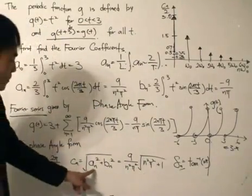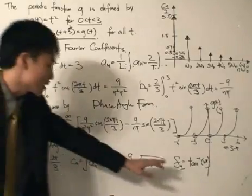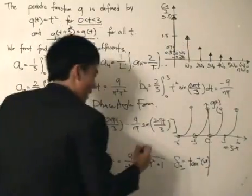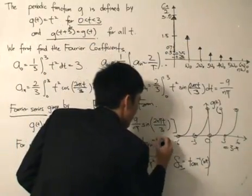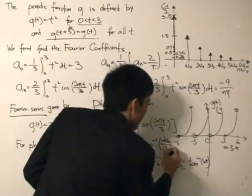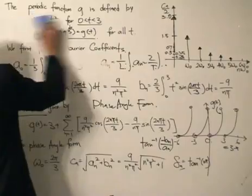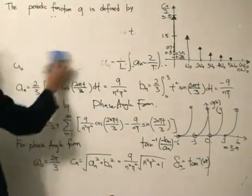So you're about to write the whole thing out. It shouldn't be that difficult. g(t) is going to equal... The a₀ stays the same, so we've got 3. Plus, we open up the summation n equals 1 to infinity.